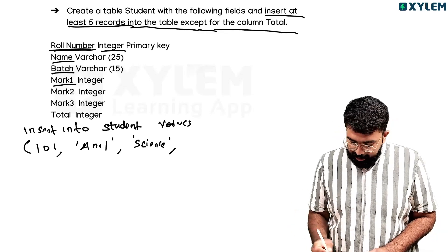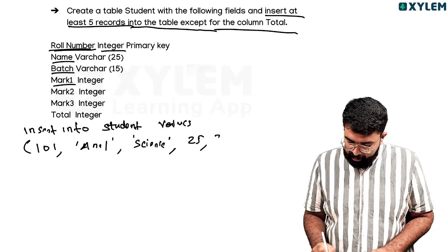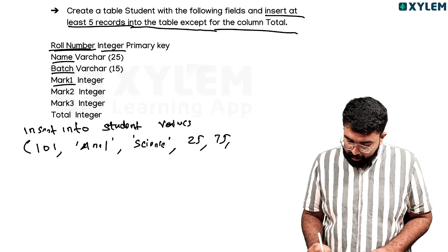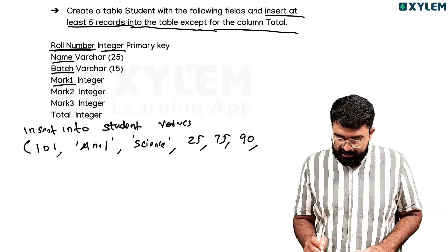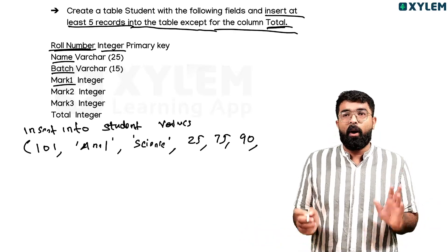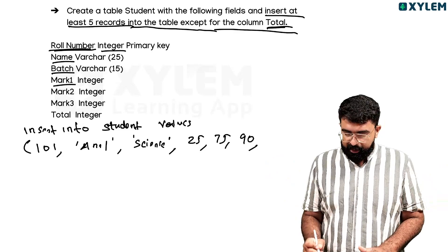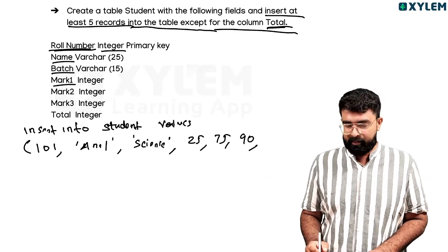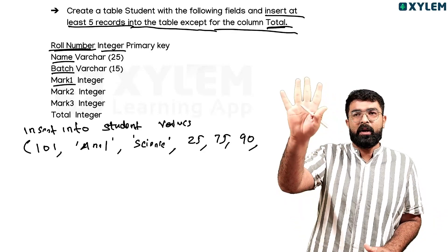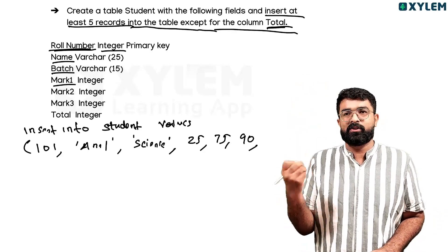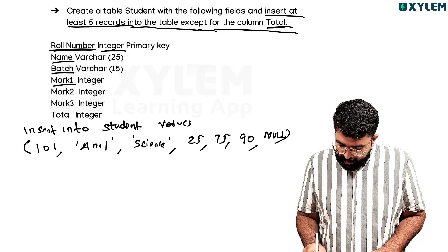The batch value is a character, a string in single quotes. Next is mark1 - that's an integer, 25. Then mark2 is 75, mark3 is 90. Except for the column 'total', the total column - we don't put a value there.